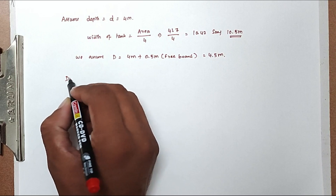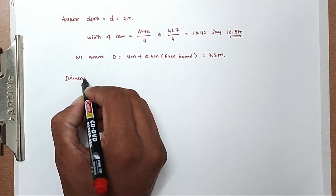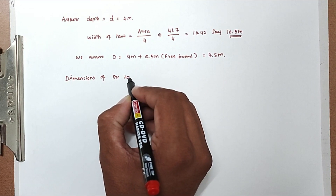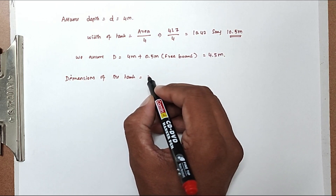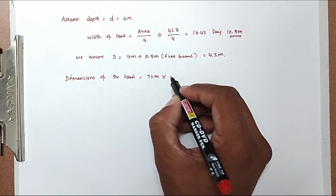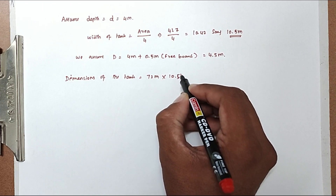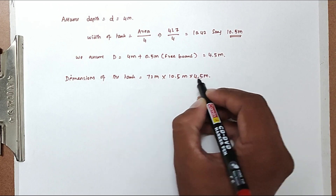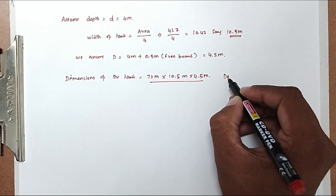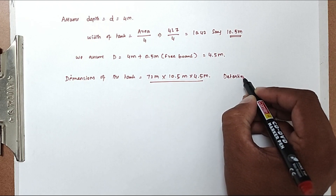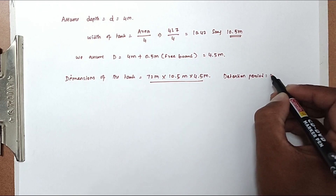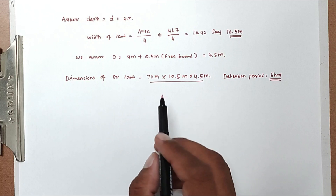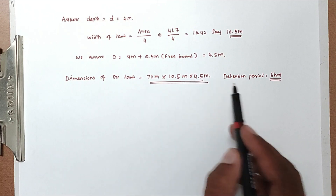So now the resulting dimensions of the tank: length is 72 meters, width is 10.5 meters, and depth is 4.5 meters. The detention period equals 6 hours as given. This is the method we can use to design the sedimentation tank. We will see more in the next video. Thank you.